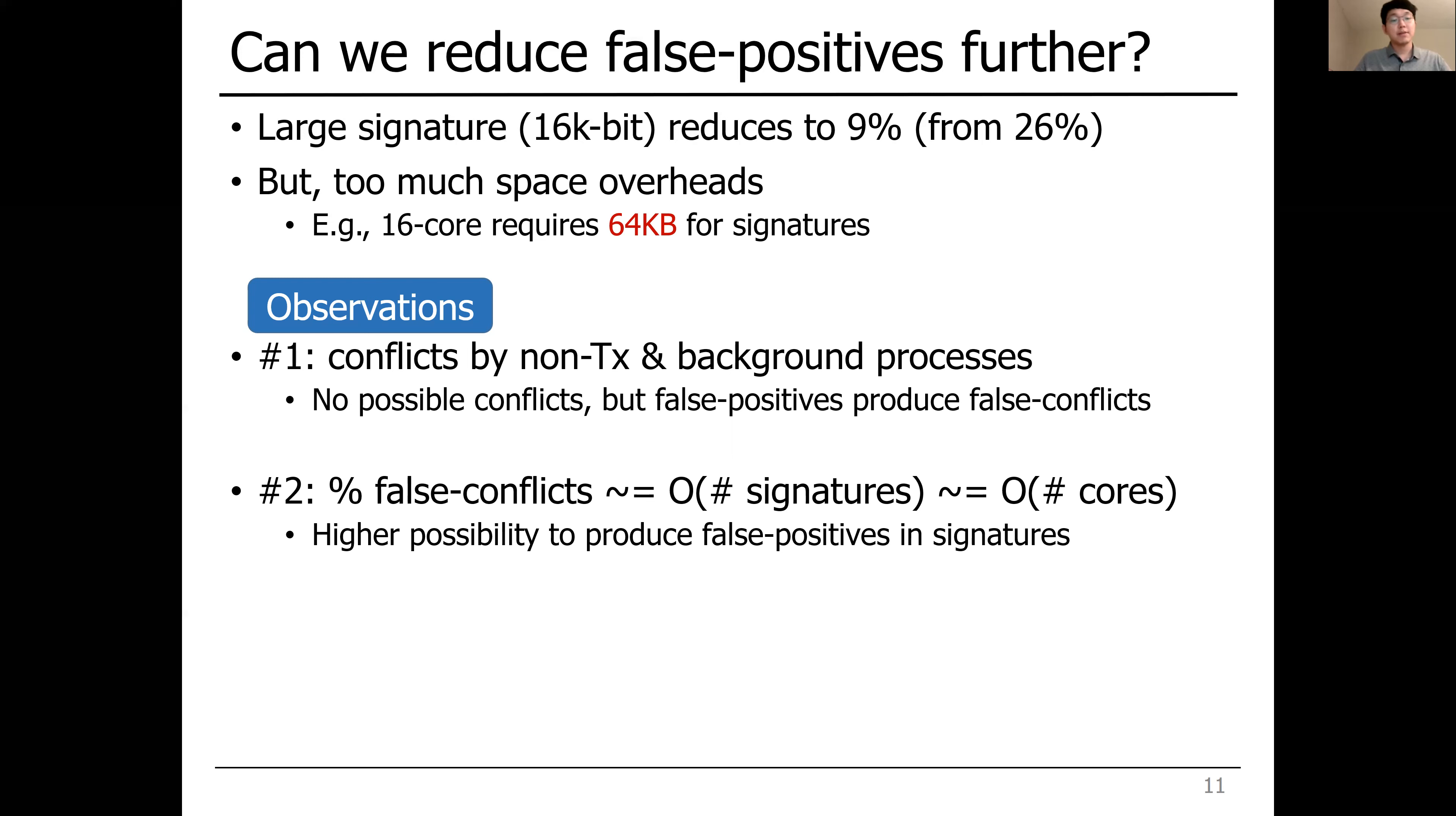That is, even if there is no possible conflicts, the signature generates false-positives when making transactions abort. So, on the same note, the number of cores or number of signatures participating in conflict checking determines how durable transactions are vulnerable to false-positives.